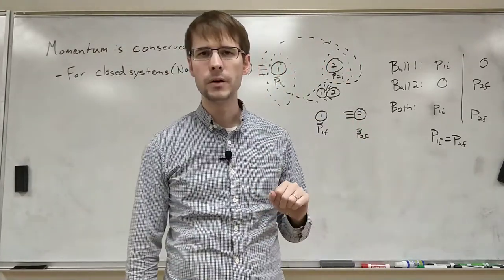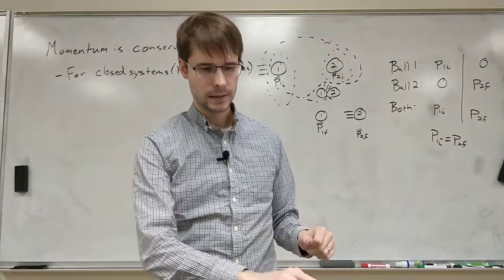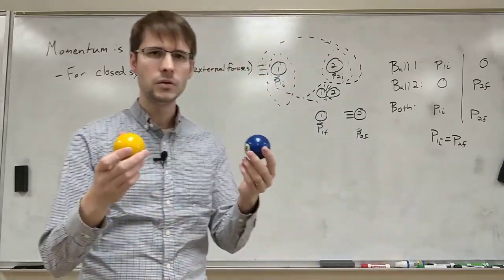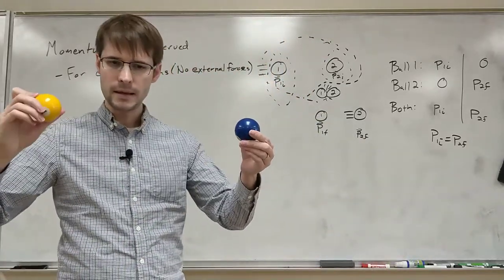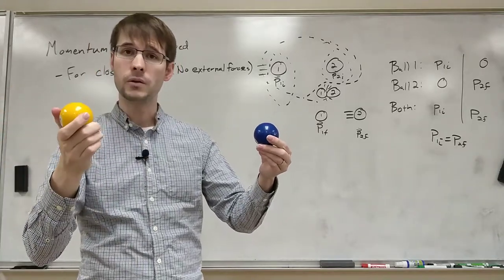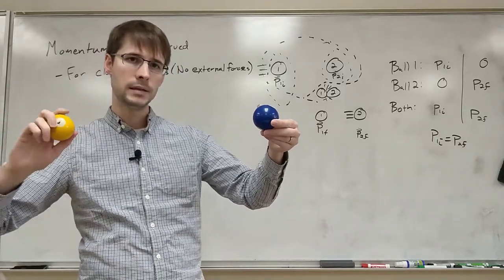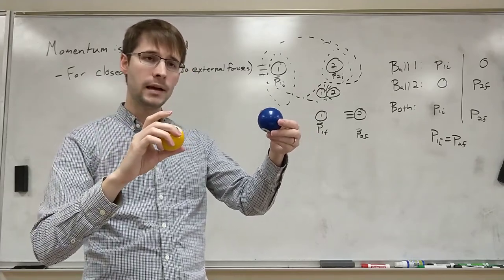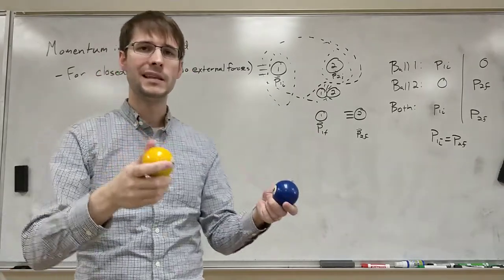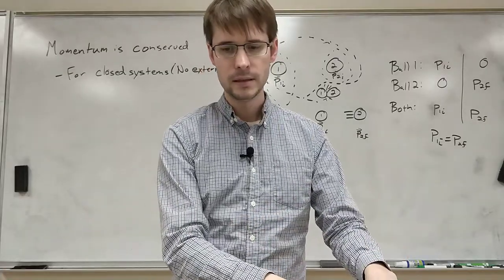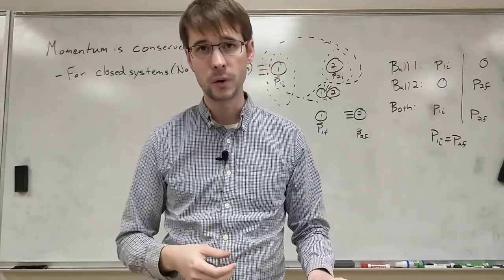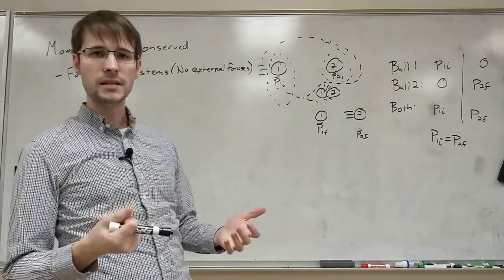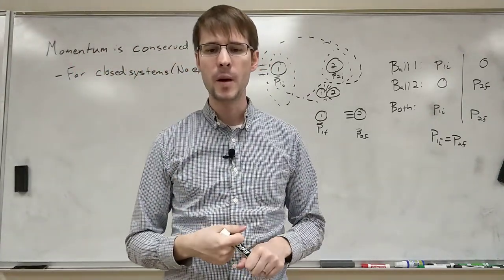If we think back to our billiard ball example, that would be the two balls. Whatever force caused the first one to move, that would be an external force. So before that point, momentum is not conserved. But after that external force goes away, the momentum of the whole system will stay the same for the rest of time. Until there's some other external force acting on it.